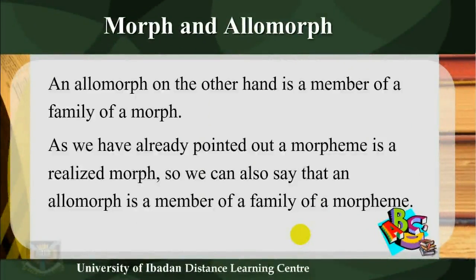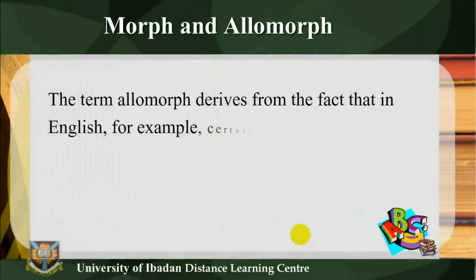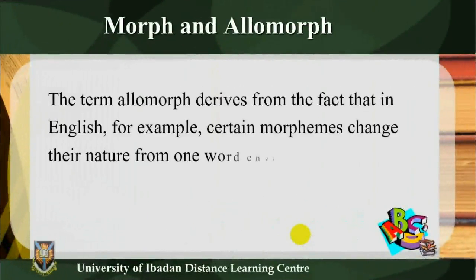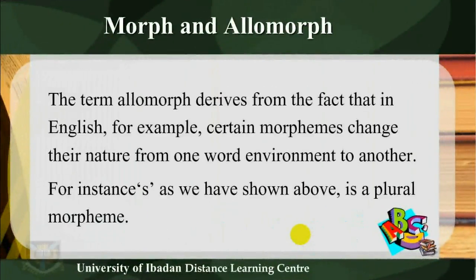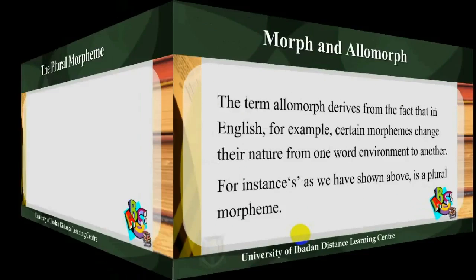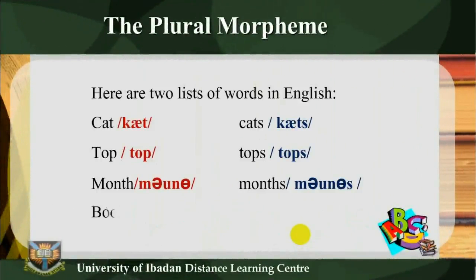An allomorph is a member of a family of morphs. Since a morpheme is a realized morph, we can also say that an allomorph is a member of a family of a morpheme. The term allomorph derives from the fact that in English, certain morphemes change their nature from one word environment to another. For instance, the plural morpheme is one such example.